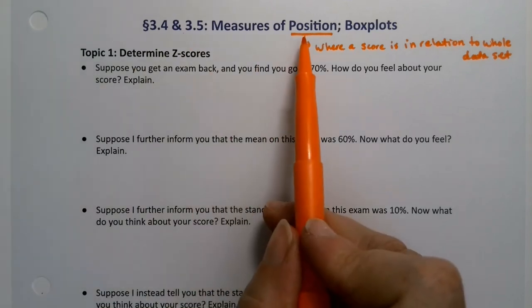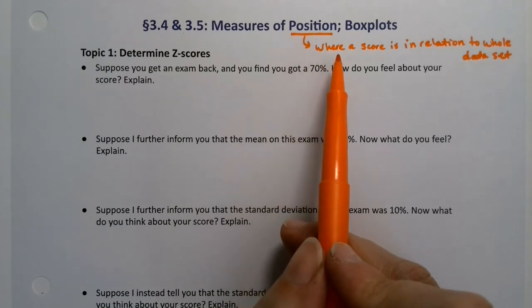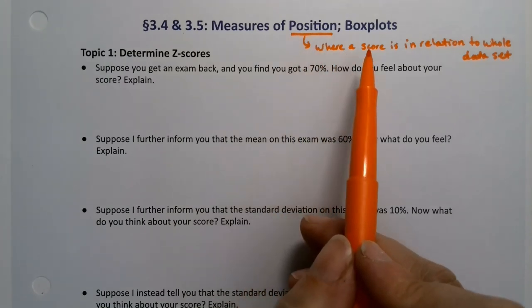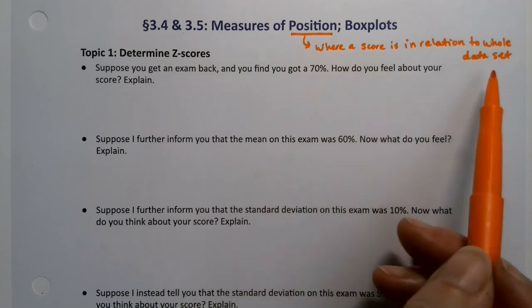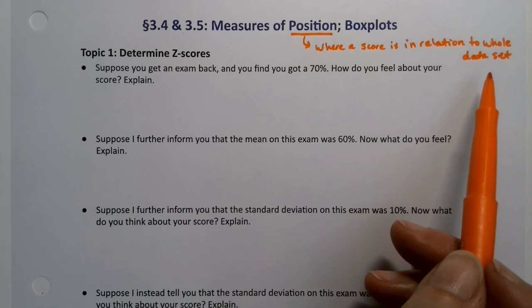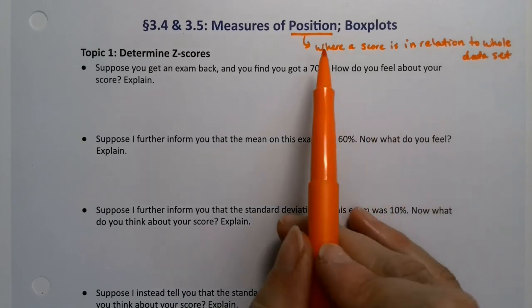Now measures of position, I just want to mention what that is. A measure of your position is a measure of where the score is in relation to the whole data set. So are you above, are you below, did you score really well, did you score really poorly, etc. So that's a measure of position.